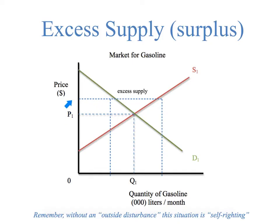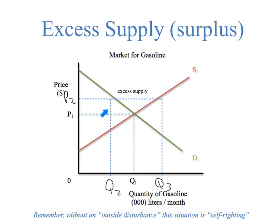Let's say P1 is $5 and P2 is $10. At P2, this amount of suppliers would be willing and able to produce it at a price of $10. However, at $10, only this quantity of demanders or consumers are willing to pay that price. So only Q2 will be sold in the marketplace at the price of P2, because these are the only people willing to pay that price.